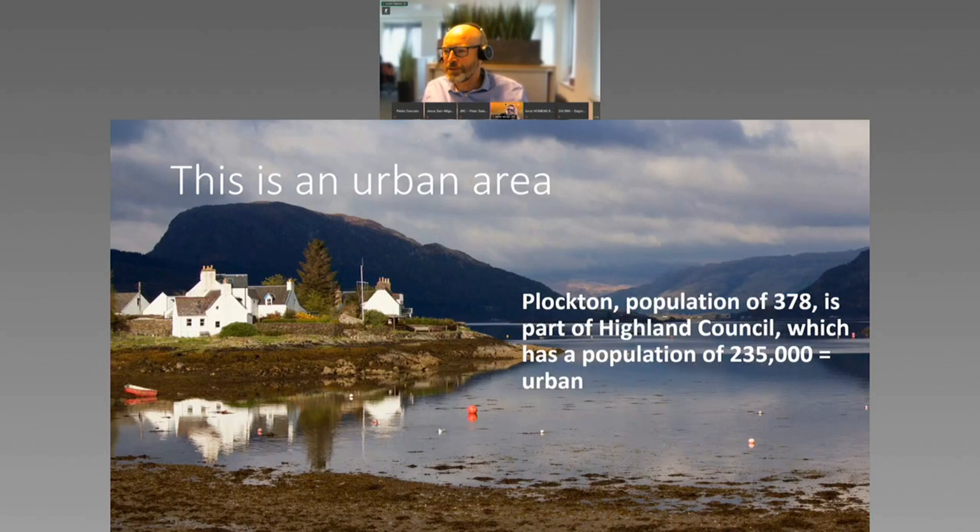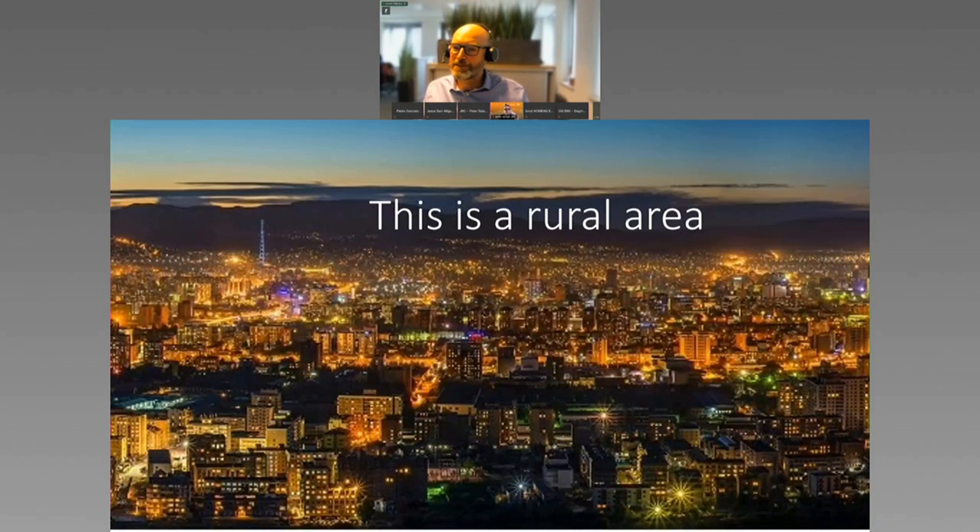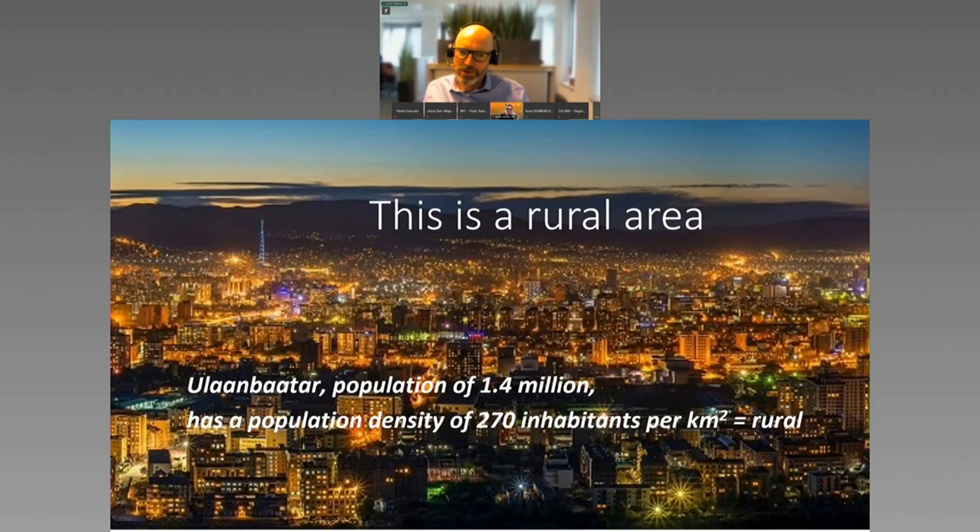So how do you fix this? You use population density, but then this is a rural area. This is Ulaanbaatar, 1.4 million, so definitely big enough to be urban, but because it's part of a large municipality, it has a very low density, so it becomes rural.